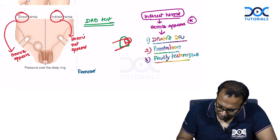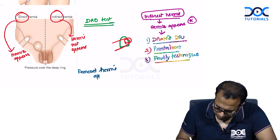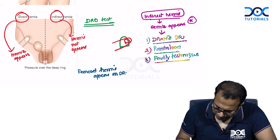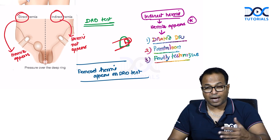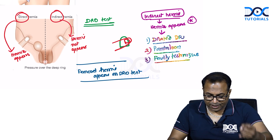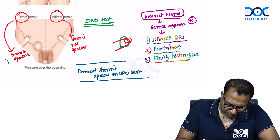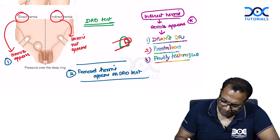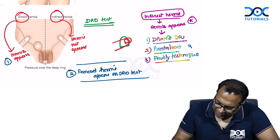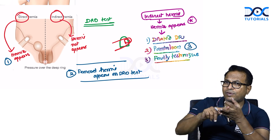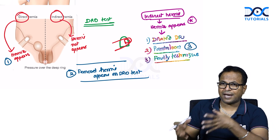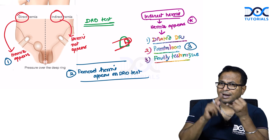Also, in the deep ring occlusion test, femoral hernia will appear since it is different from inguinal hernia. So the three hernias that appear back on deep ring occlusion test are: direct hernia, femoral hernia, and pantalone hernia. Indirect hernias will usually never appear.